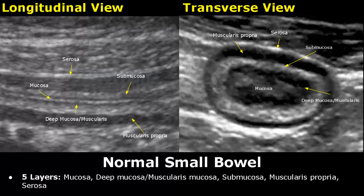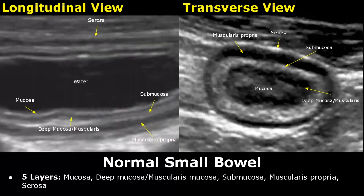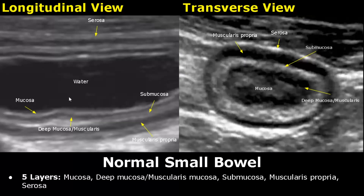We may not always see all five layers, as they can be compressed by the probe, the nearby mesenteric fat, or if they are filled with fluid or intraluminal contents. Here is a water-filled stomach. The stomach and the intestines layers have the same appearance on ultrasound.